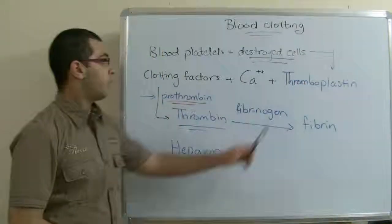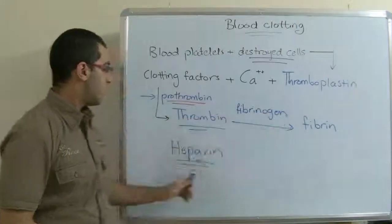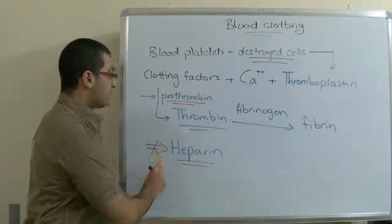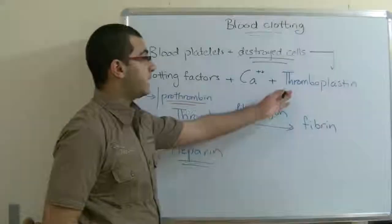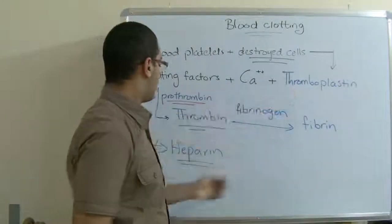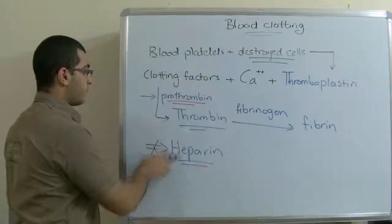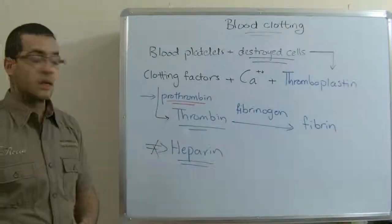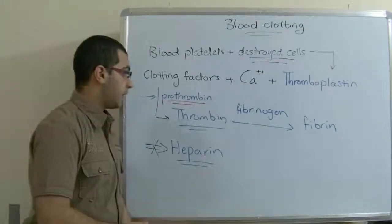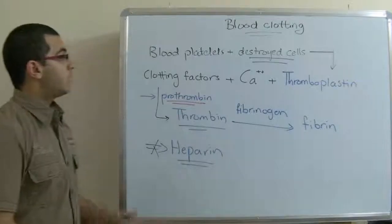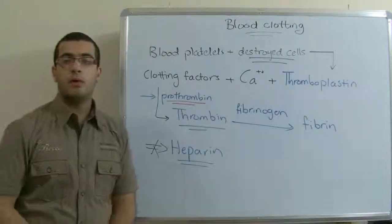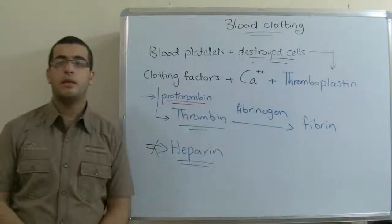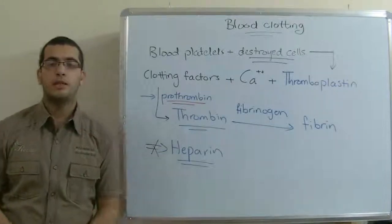So when the Thromboplastin is produced, Heparin's function stops. And when the Thromboplastin is not available, Heparin works by preventing the Prothrombin from converting into Thrombin, and thus preventing blood clotting. This is it for today. Next time we will have a short account on the lymphatic system, and until then, thank you for watching and see you next time.